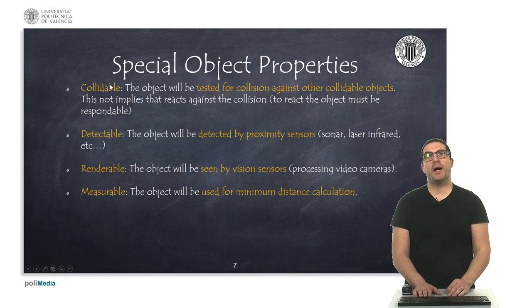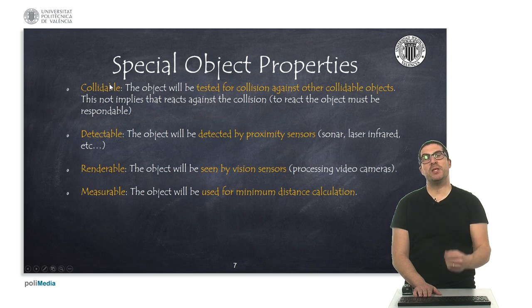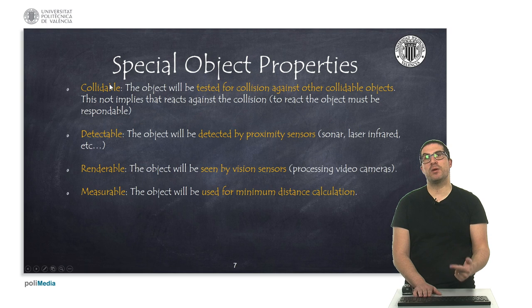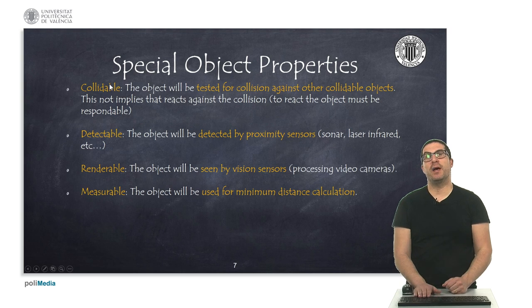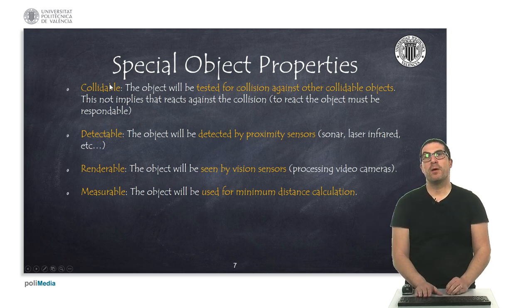Also, a detectable object will be detected by proximity sensors. So if we activate this property, it means that proximity sensors such as ultrasonic, laser, or infrared can detect the object and will provide a distance of that object to the robot or to the sensor.